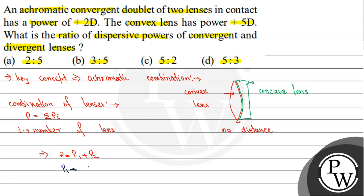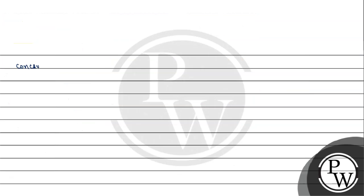P1 is the power of the convex lens, which is the converging lens. We denote it as Pc, and it is given as plus 5 diopter. The combination power P is given as plus 2 diopter. The second lens is the concave lens — the diverging lens. Its power is Pd, which we need to find.